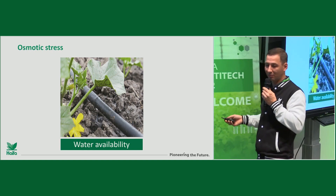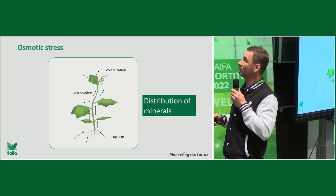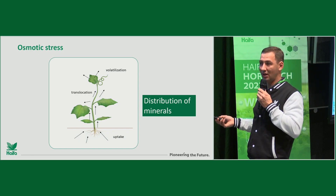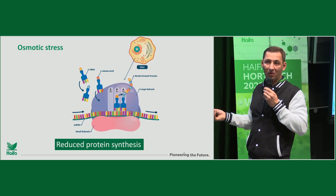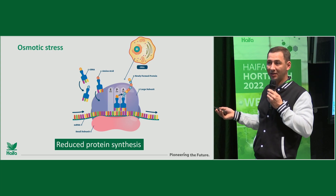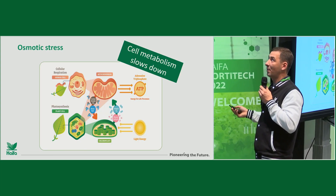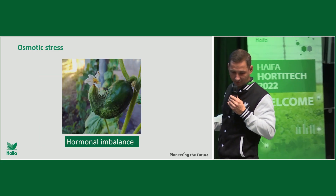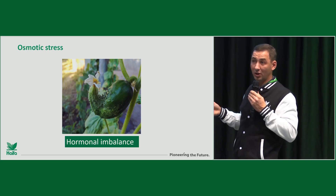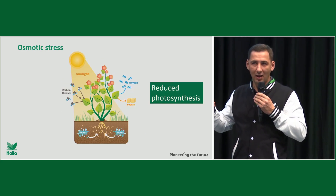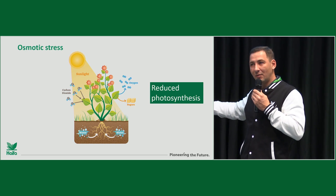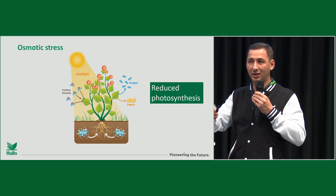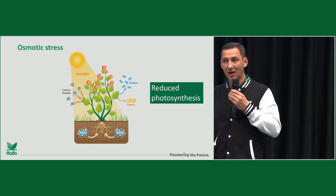If we create osmotic stress, it is a problem for the plant - a problem for water uptake, for distribution of minerals, for protein synthesis, which is reduced. All cell metabolism is slowing down. We can also expect hormonal imbalance in the plants. If we create any stress to plants, all the photosynthesis and in the end the productivity of the plant is much lower.